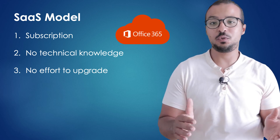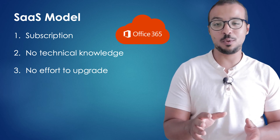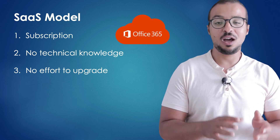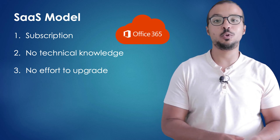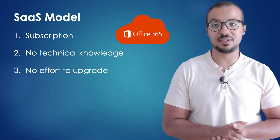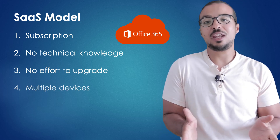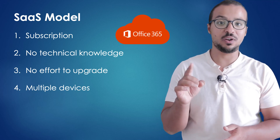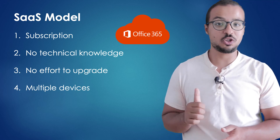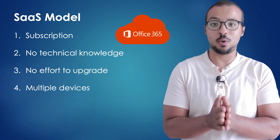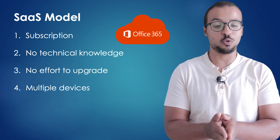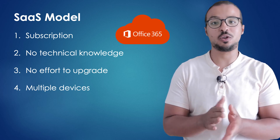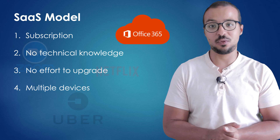For example, all the new features created by Microsoft related to artificial intelligence are already available to anyone using Office 365. And we can use our account on multiple devices, not just one device as in the traditional model. For example, I can log into my Microsoft account on my smartphone and on my laptop and get access to Microsoft Office on both of them.